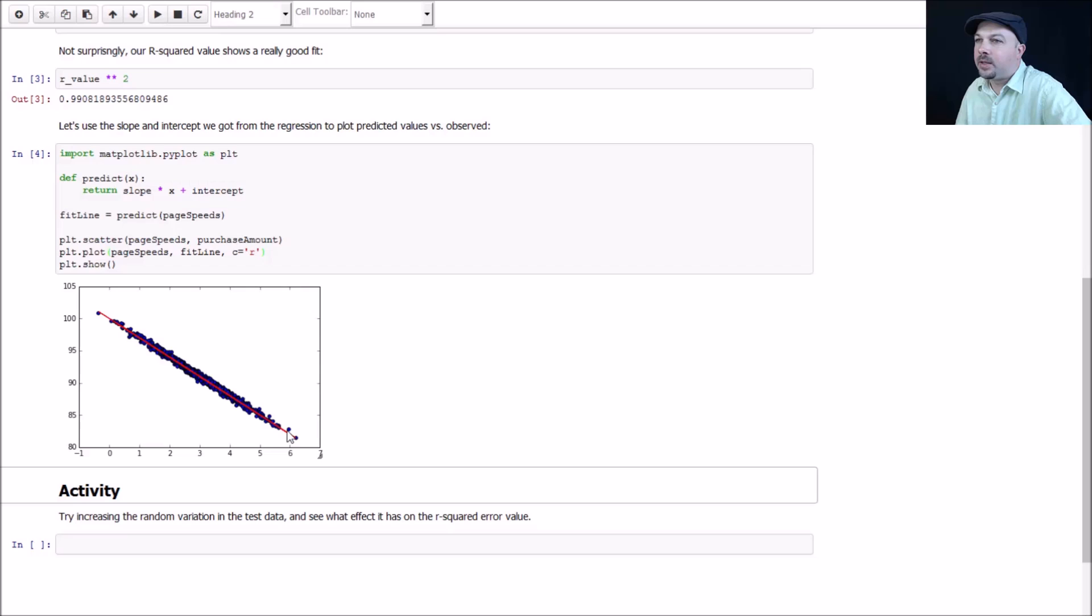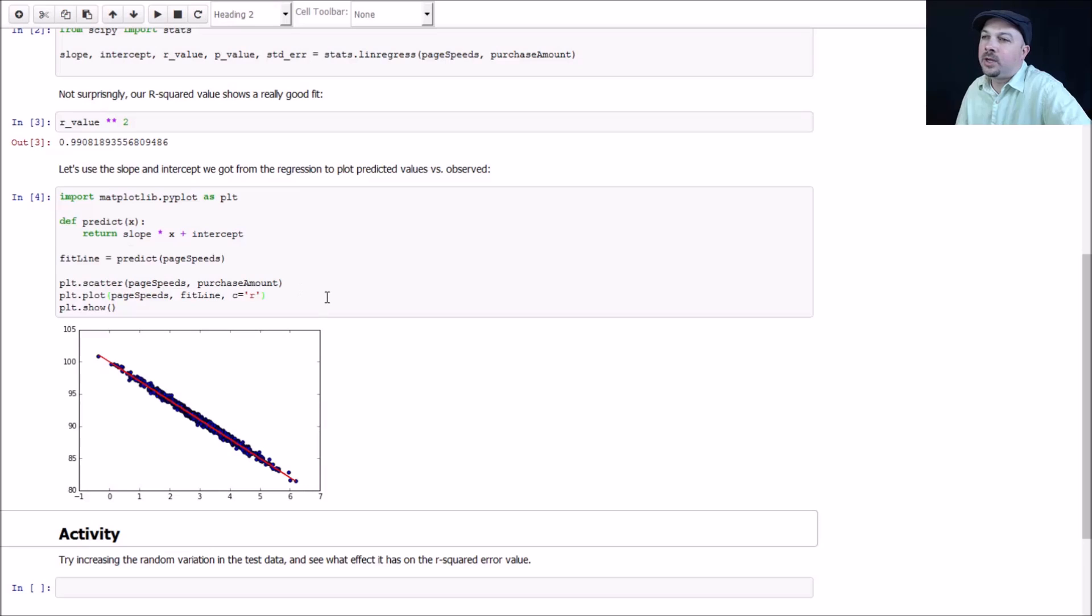All you need to predict new values is this predict function. Given a new previously unseen page speed, we could predict the amount spent just using the slope times the page speed plus the intercept. That's all there is to it. Time to get your hands dirty. Try increasing the random variation in the test data and see if that has any impact. Remember, R squared is a measure of the fit. How much do we capture the variance? See if the amount of variance makes a difference or not.